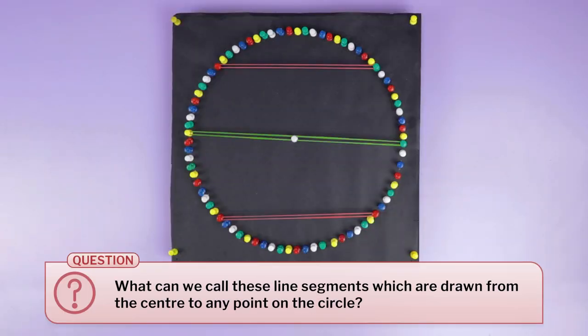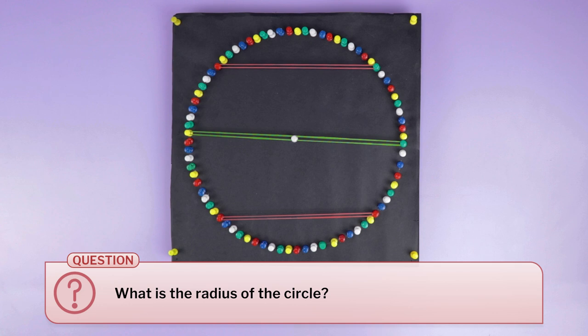Verify whether the length of the Geo band stretched between the center and any other point remains constant. Sometimes, if the center of the circle on the Geoboard is not precise, then students might get confused. So make sure that measurement errors and shape distortions are minimum. After this activity, some questions might pop in children's mind, so it's a good time to introduce the new concept — radius. You can use enquiries like: what can we call these line segments which are drawn from the center to any point on the circle? What is the radius of the circle? How many radii can be drawn in this circle?